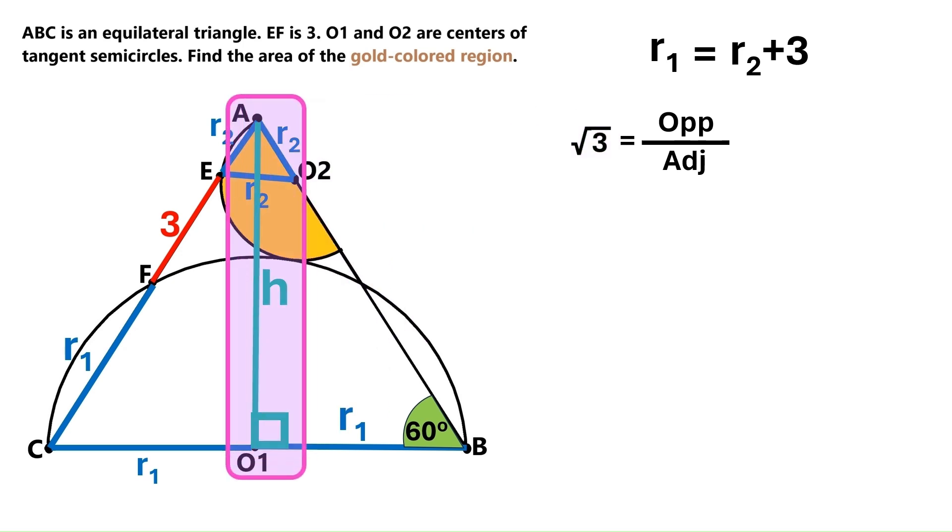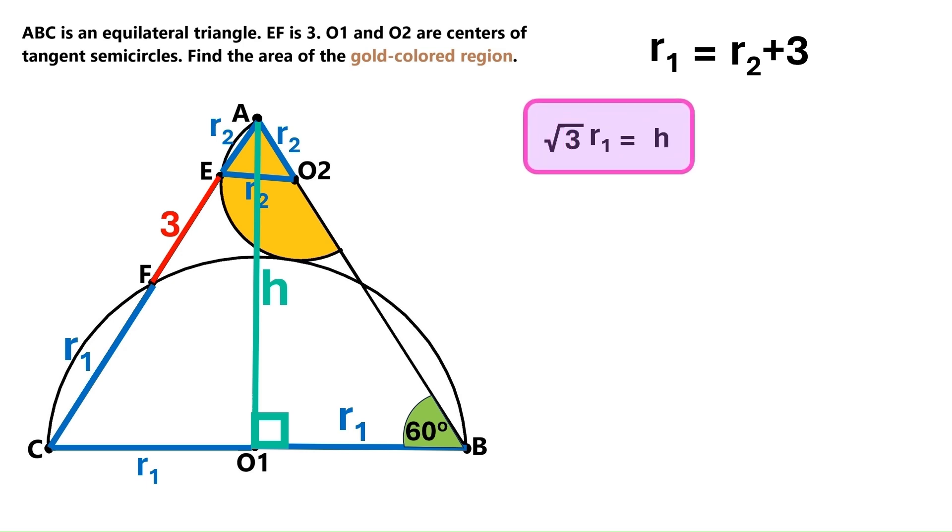And it's well known that tangent 60 is radical 3. H is the opposite side, and R1 is the adjacent side. So let's substitute them in this equation. We can take this R1 and move it to the left-hand side like this. H turns out to be radical 3 times R1. Let's change this H to that. Now, let's take a look at this small equilateral triangle up here. This height cuts it into two equal parts.